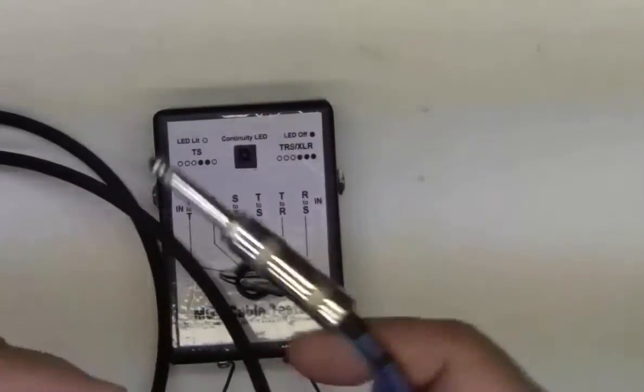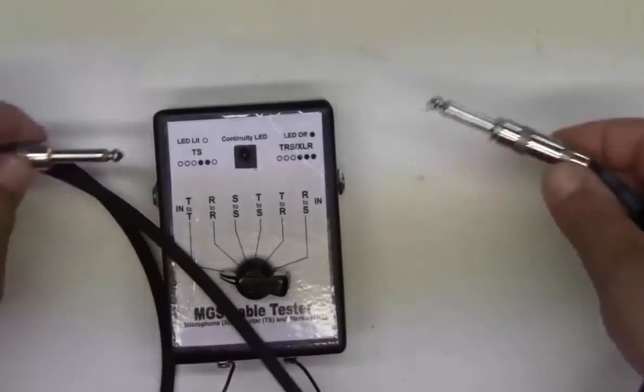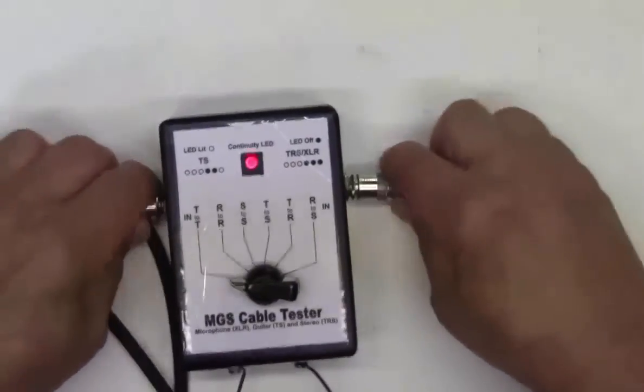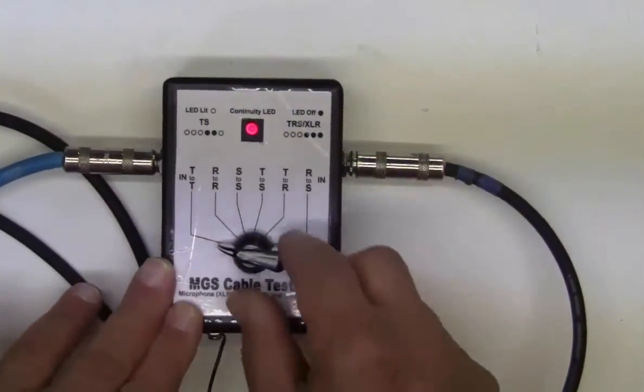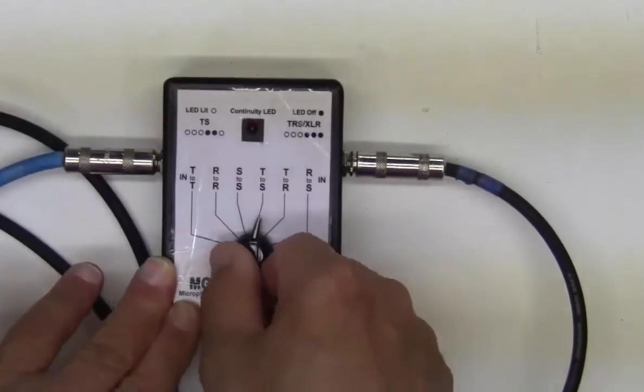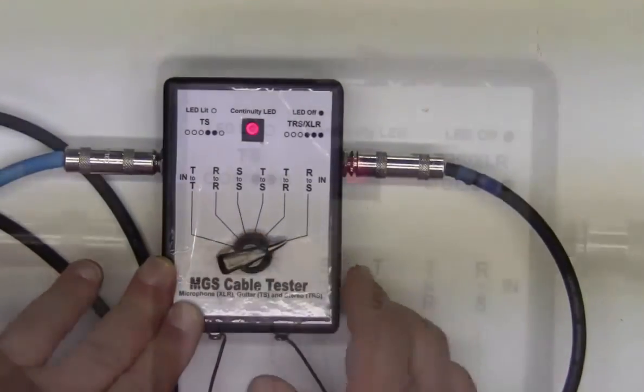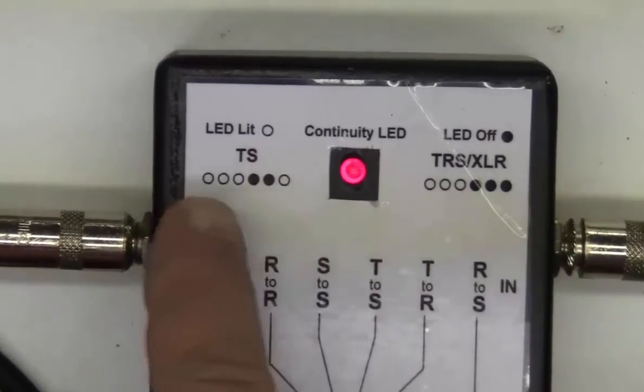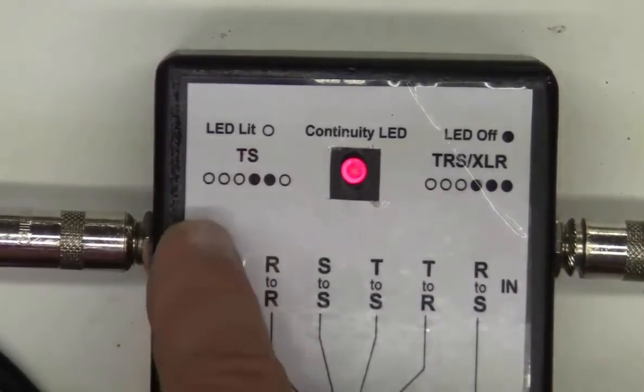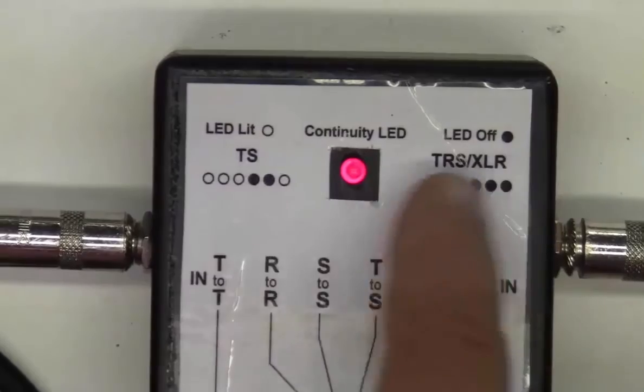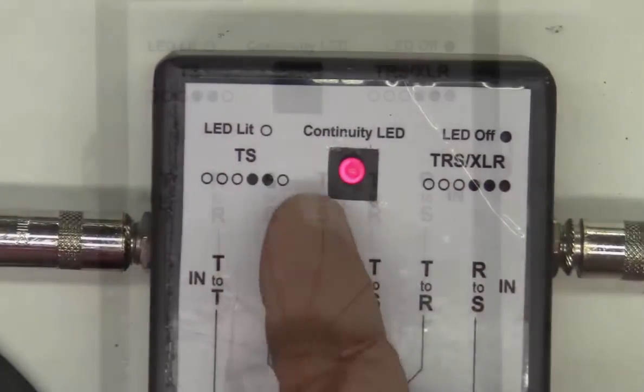If I take a normal guitar chord, which is a TS chord, I go red, red, red, black, black, red. You notice the lead is lit in position one, one, one, lead off, off, and then back on. So that indicates a good cable.